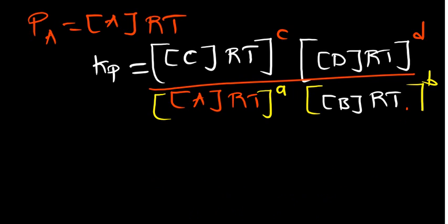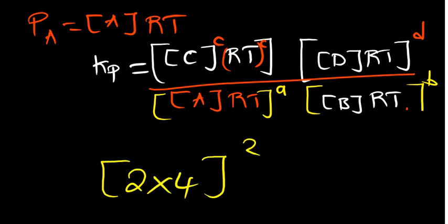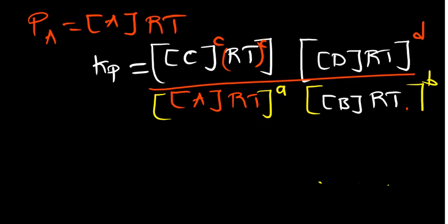Now we need to distribute the powers. It's like if you have (2 × 4) raised to the power of 2 — it's the same as 2² times 4². We do the same here. So for each term, the power is distributed to both the concentration and to RT. The concentration of C gets power c and RT gets power c; concentration of D gets power d and RT gets power d; concentration of A gets power a and RT gets power a; concentration of B gets power b and RT gets power b.